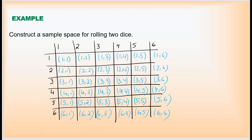These are all the possible outcomes. We have 6, 6, 6, 6, 6, and 6 — so the total number of outcomes is 6 times 6, that is 36. We listed all possible outcomes in the form of a table, and this is the sample space for rolling two dice.